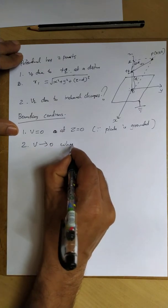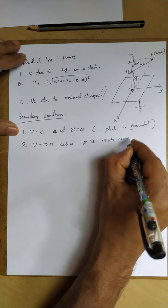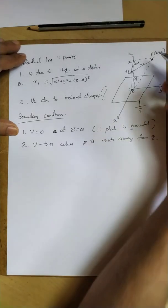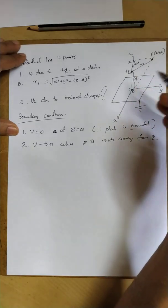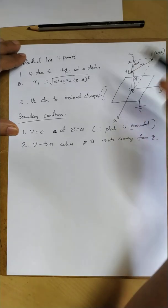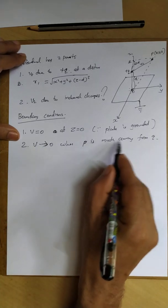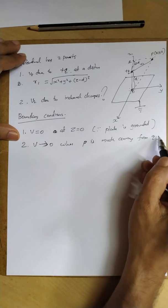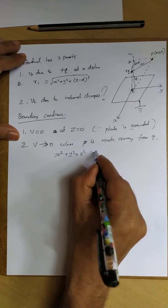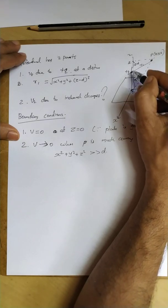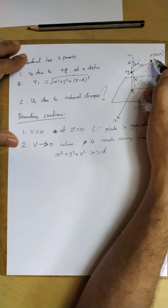The second boundary condition is: V tends to zero when point P is very far away from charge Q. When the point P is at infinity, the potential is zero. Mathematically, when x squared plus y squared plus z squared is much much greater than d squared, V tends to zero.